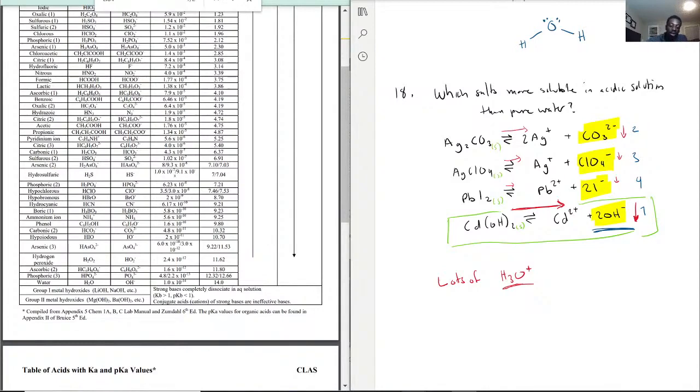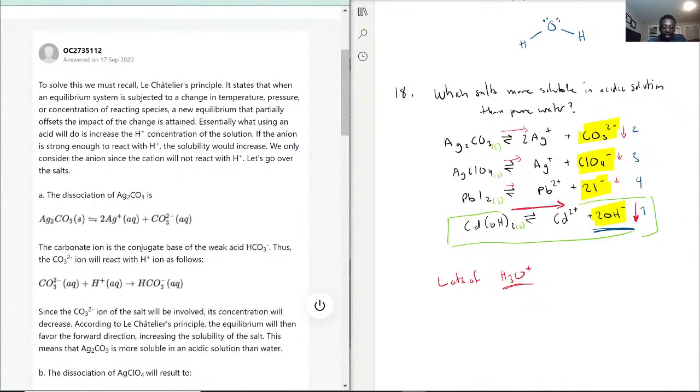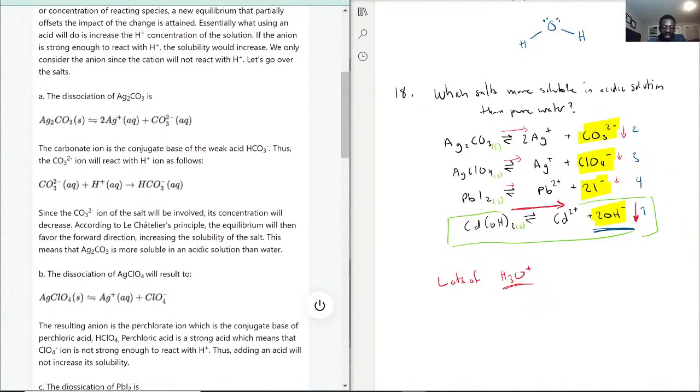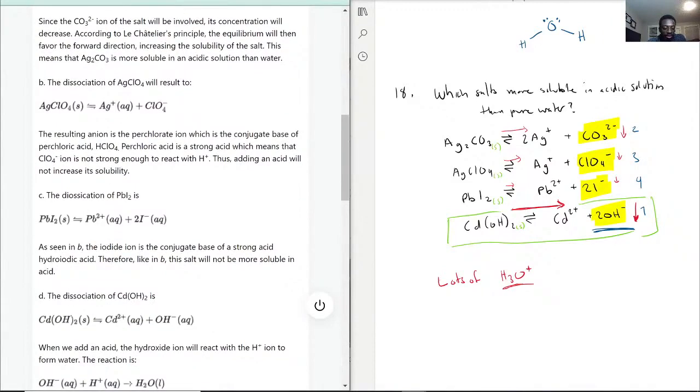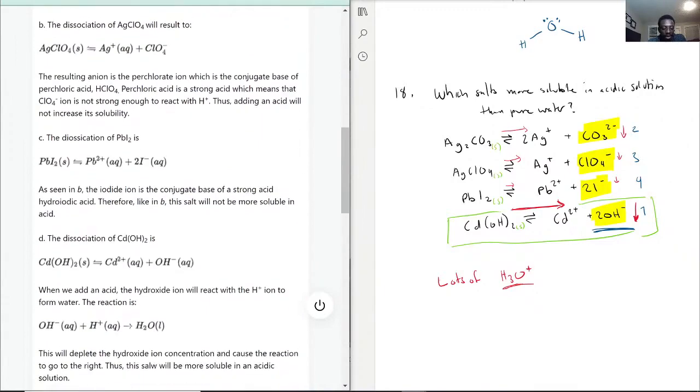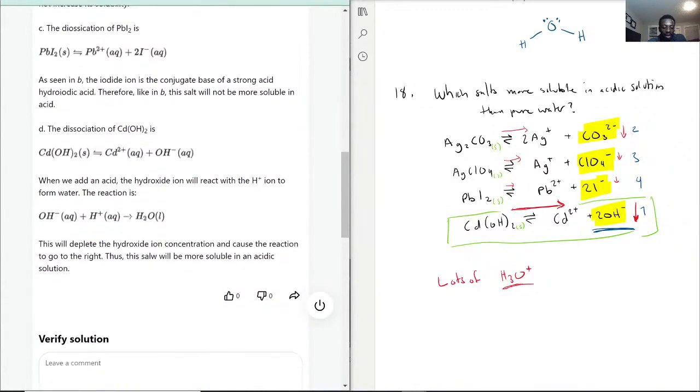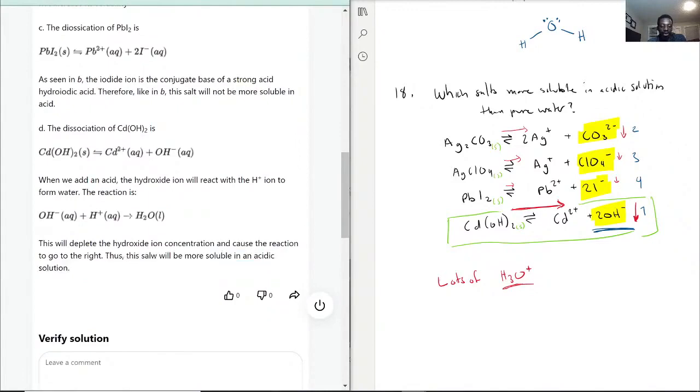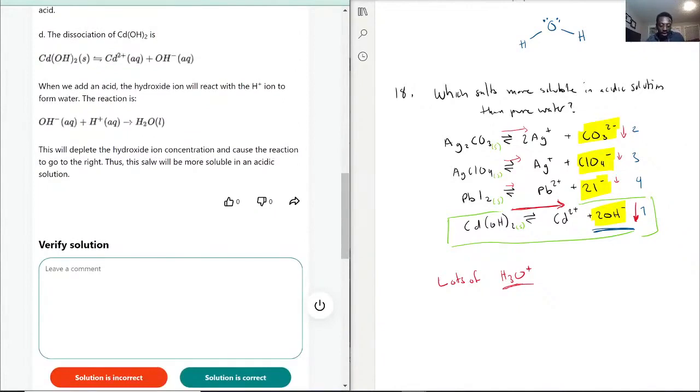They mentioned that carbonate ion makes HCO₃⁻, AgClO₄ for perchloric acid, iodide hydrogen iodide, and then cadmium hydroxide. This salt will be the most soluble in acidic solution. This is correct.